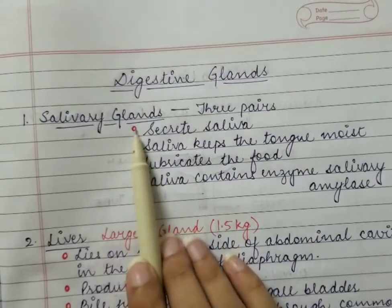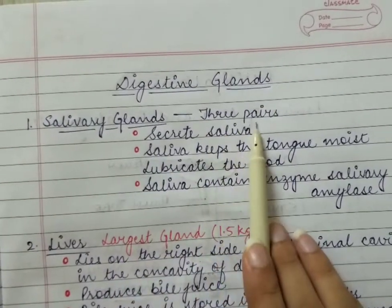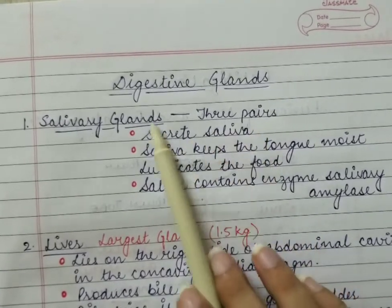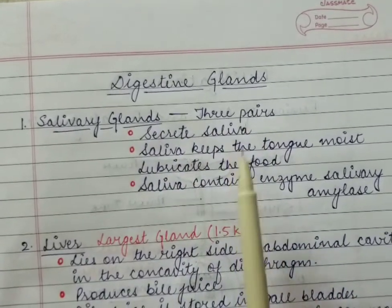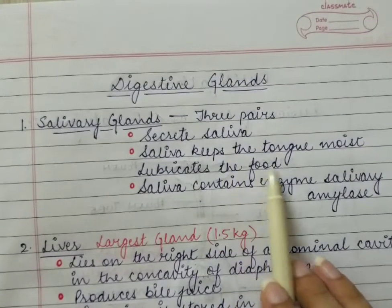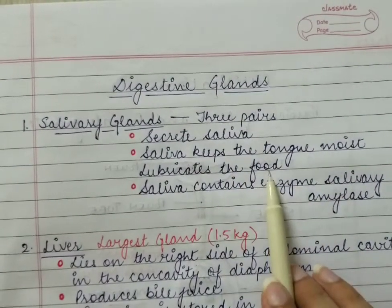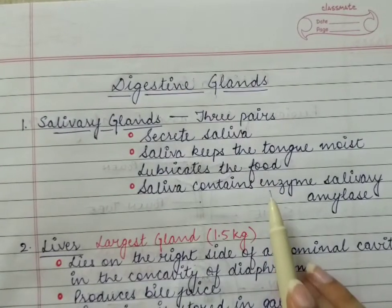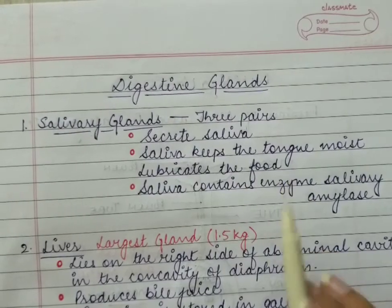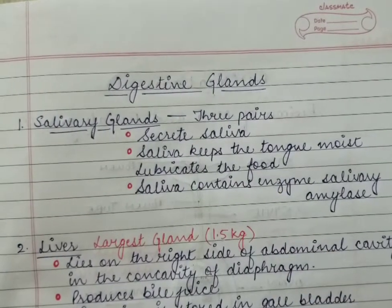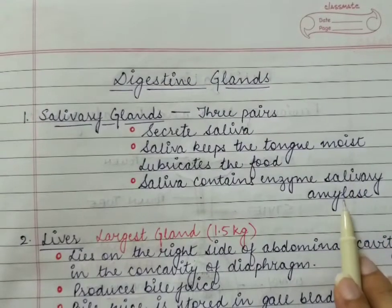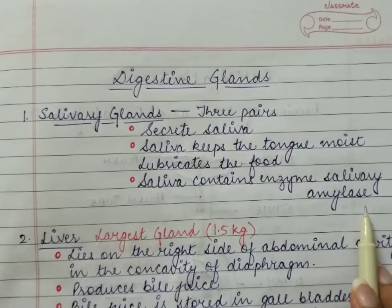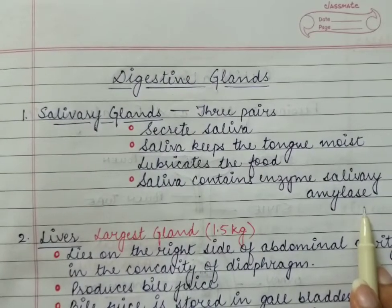First, the salivary glands. They are present in three pairs and they open in the buccal cavity. These salivary glands secrete saliva, and the saliva helps to keep the tongue moist. It lubricates the food, making it easier to chew and swallow. The saliva also contains an enzyme known as salivary amylase, which helps in the breakdown of complex sugars into simple sugars.